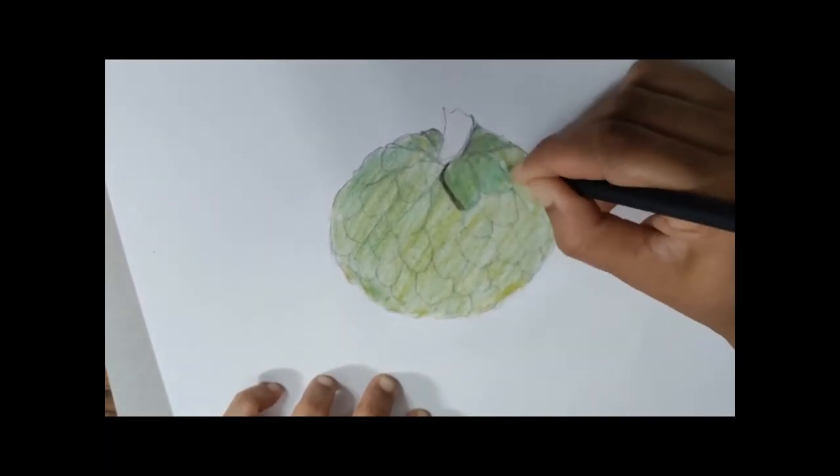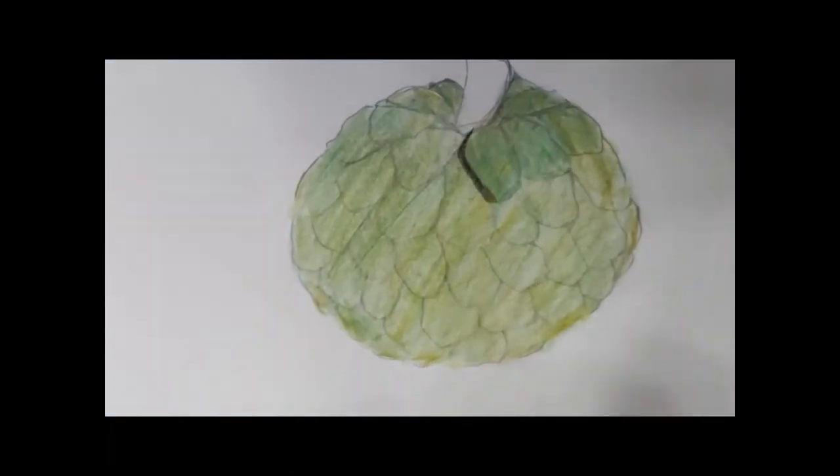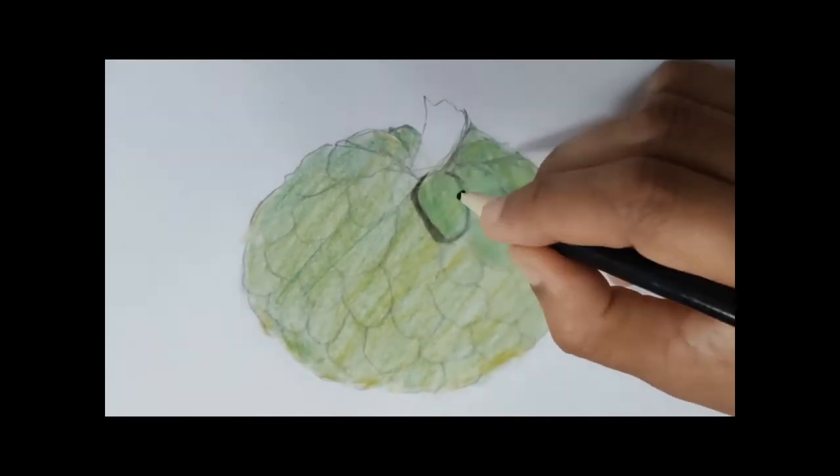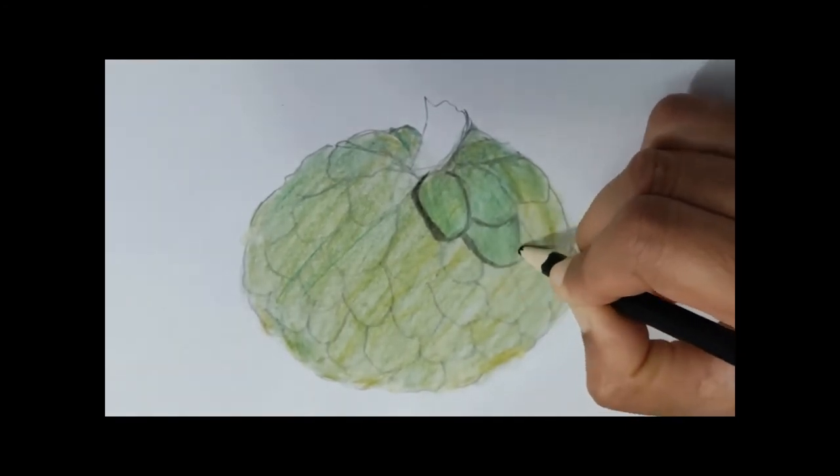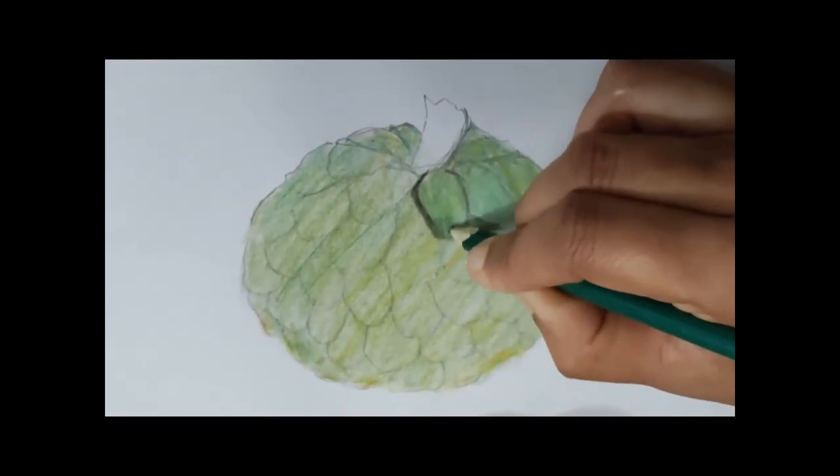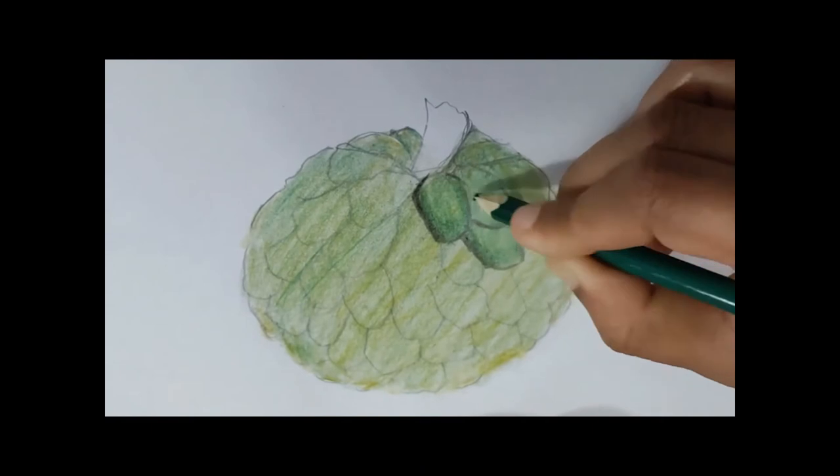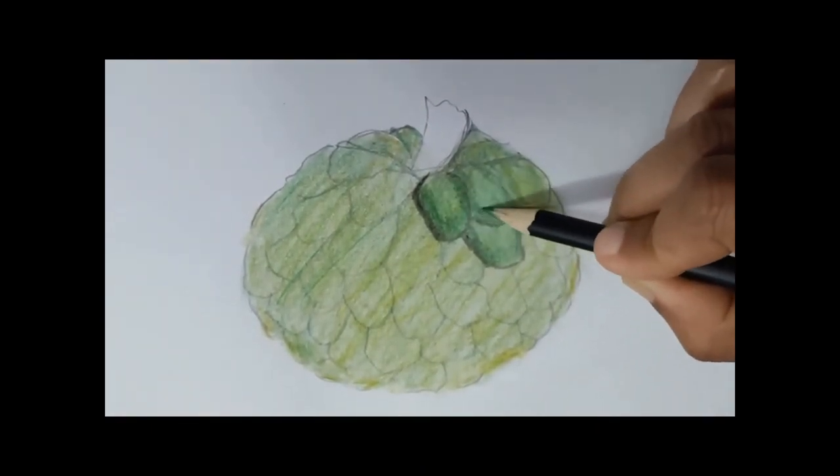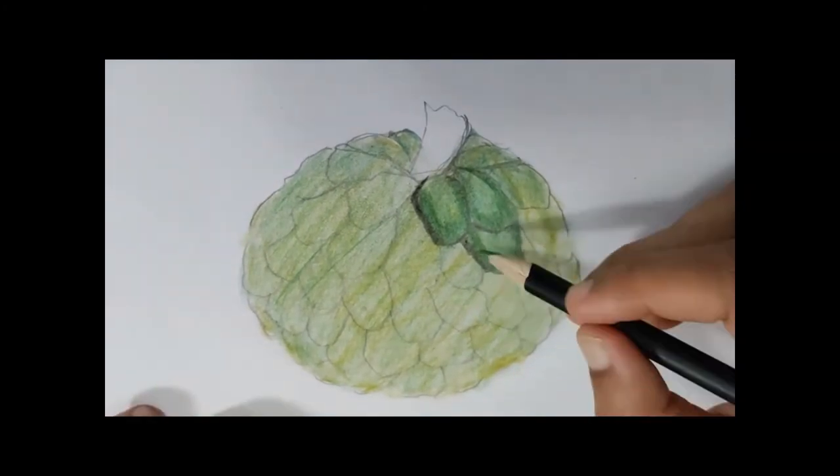The next thing is we are going to differentiate the scales. I am going to use the green color to differentiate the scales. You have to color the outline of the scale with a darker one, not lighter one, with a darker one. How I am doing it, just have a look at it.